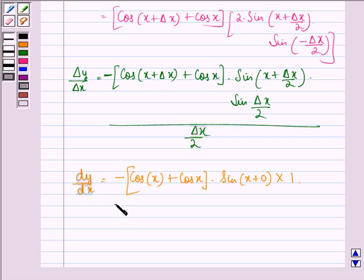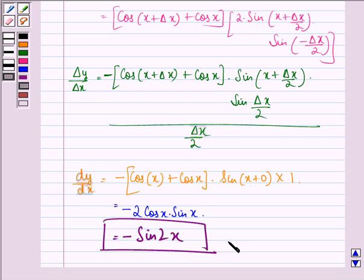This is further equal to minus 2 cos x sin x. That can also be written as minus sin 2x. So this is our answer to this question.